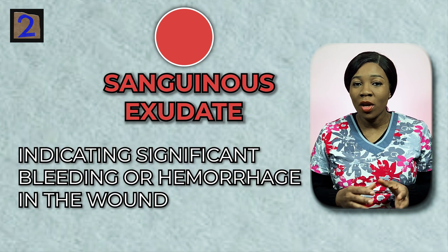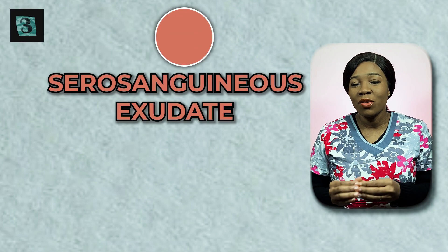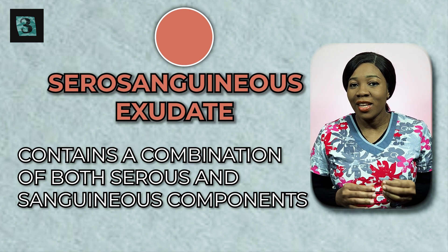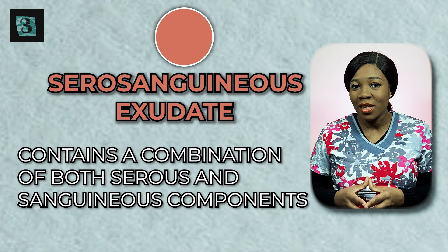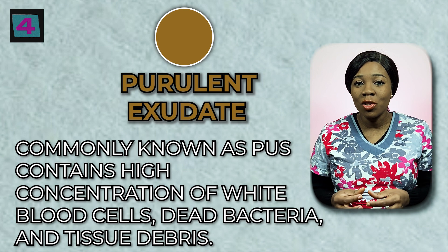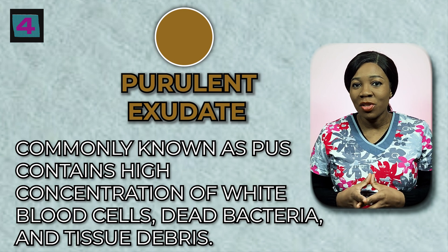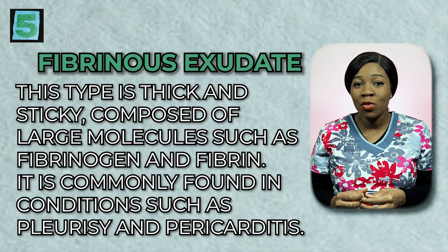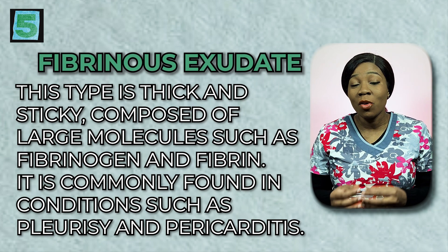Third, serosanguineous exudate contains a combination of both serous and sanguineous components. It is typically light pink or light red in color with a watery consistency and small amounts of blood. Fourth, purulent exudate — commonly known as pus — is thick and contains a high concentration of white blood cells, dead bacteria, and tissue debris, typically indicating an infection. Fifth, fibrinous exudate is thick and sticky, composed of large molecules such as fibrinogen and fibrin, commonly found in conditions such as pleurisy and pericarditis.